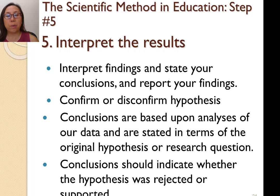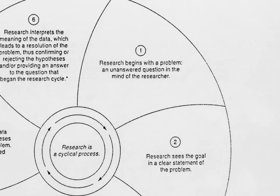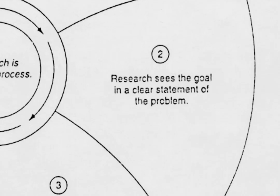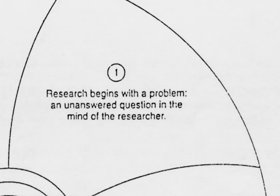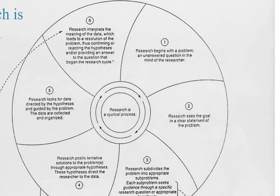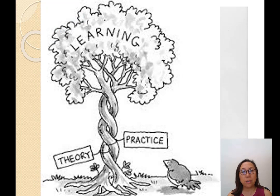Conclusions confirm or disconfirm the hypothesis and are based upon analyses of data, stated in terms of the original hypothesis or research question. Looking at the wheel diagram, the steps form a cycle — after step six, you return to step one with increased knowledge. Step one begins by learning from someone else's step six, allowing you to ask a question that makes a significant contribution to existing knowledge.